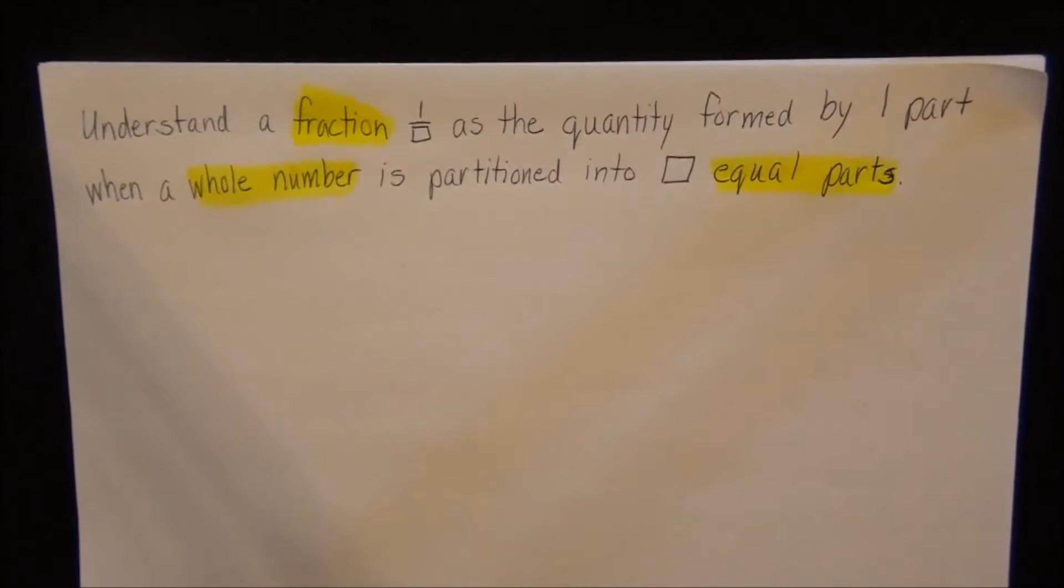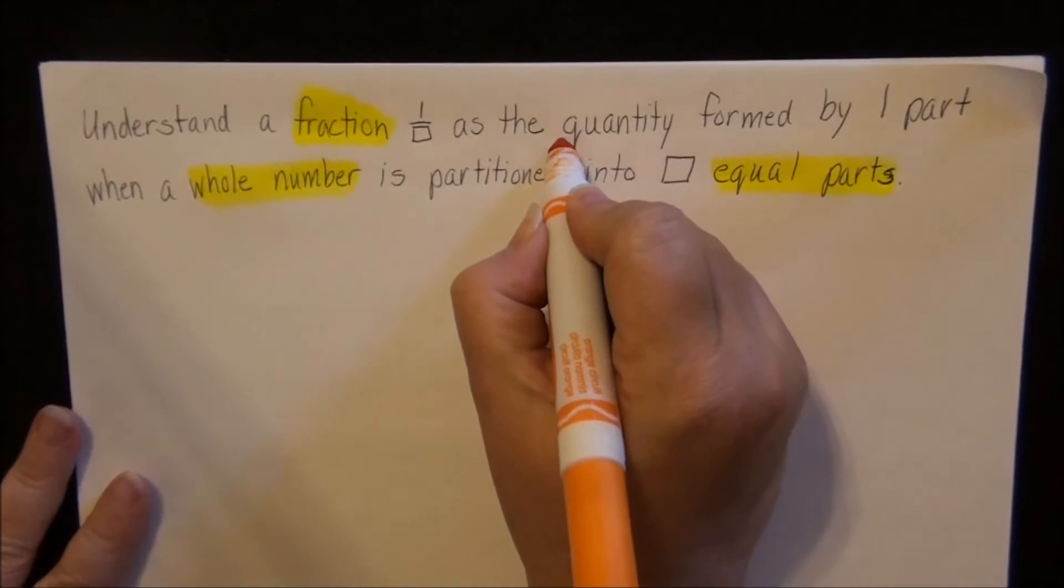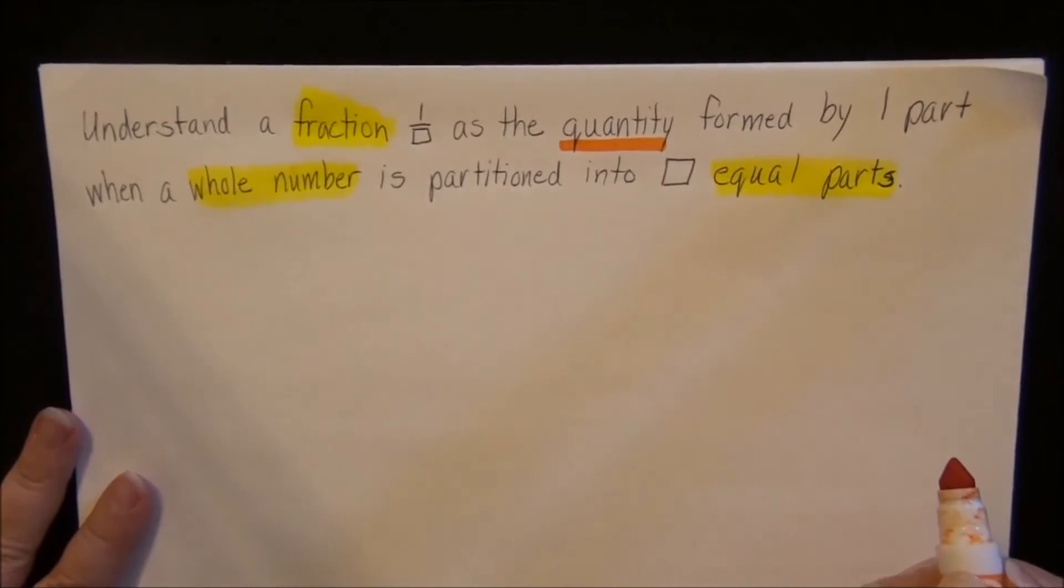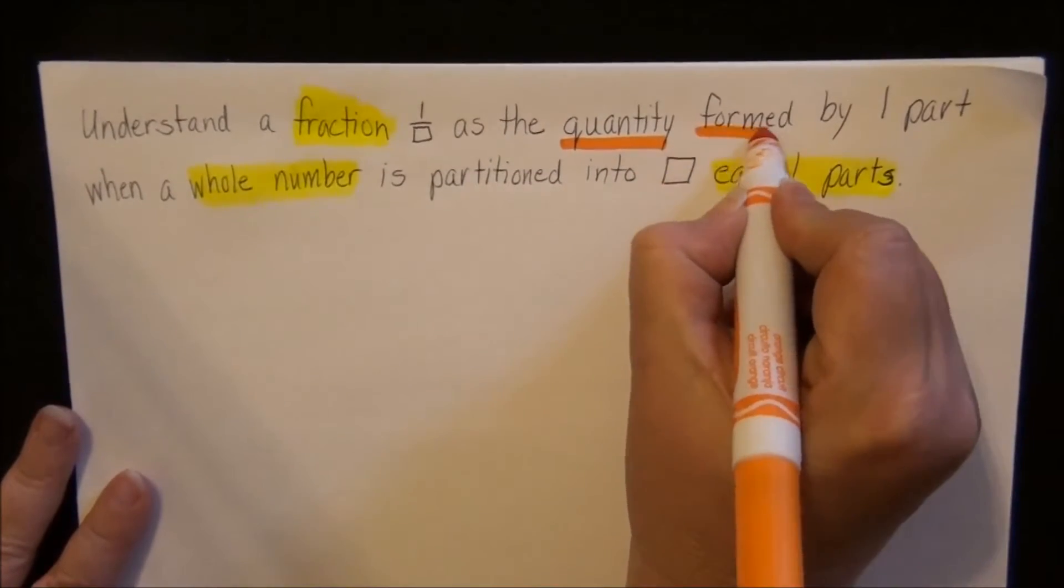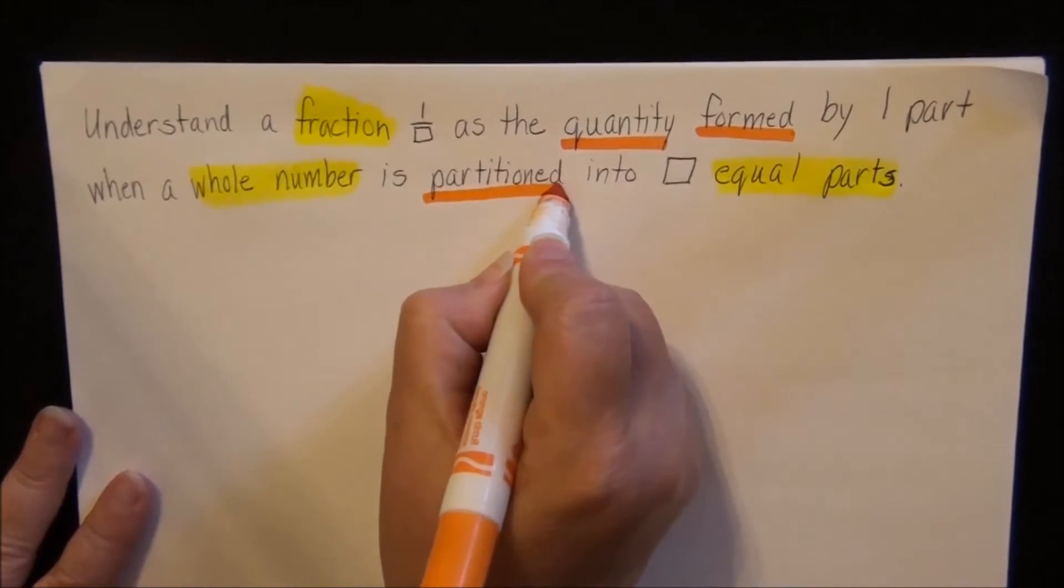Now there are some words in here that may be kind of new to you, that you may not know exactly what they mean, or you may not know how they're used in math. So the first word that I want to look at is quantity, the second one is formed, and the third one is partitioned.